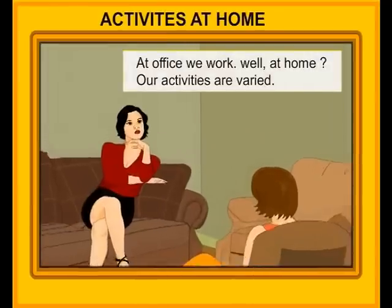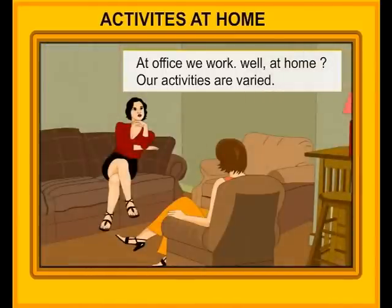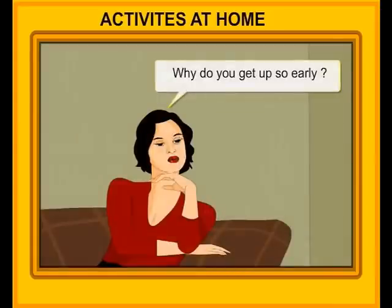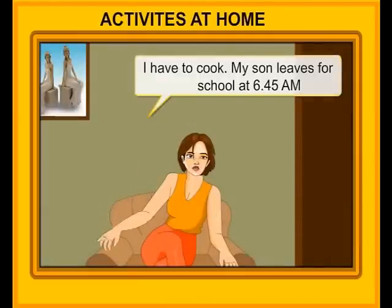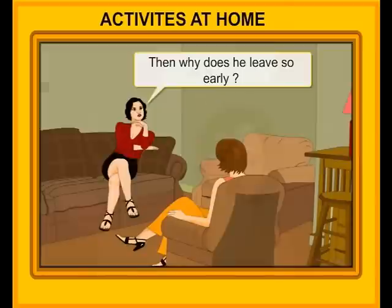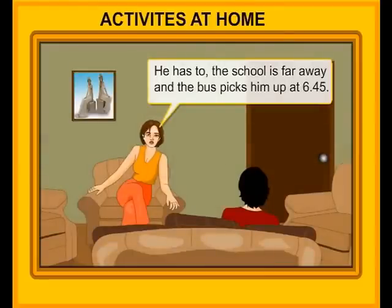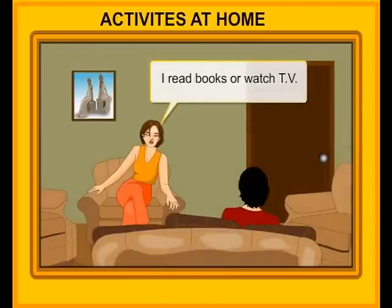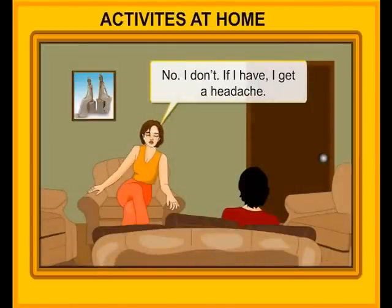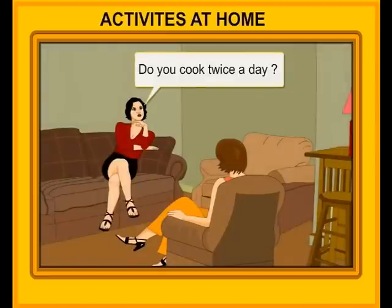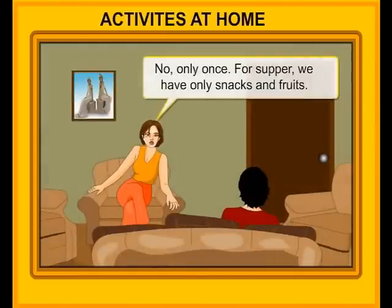Activities at home. At office we work, but at home our activities are varied. Let's see a conversation about activities at home. Normally, when do you get up? At five. Why do you get up so early? I have to cook. My son leaves for school at 6:45 a.m. At 6:45? When does his school start? At nine. Then why does he leave so early? He has to — the school is far away and the bus picks him up at 6:45. When does he return? By five. What do you do in the afternoons? I read books or watch TV. Don't you have a nap? No, I don't — if I do, I get a headache. When do you have your lunch? Usually about 1 o'clock. Do you cook twice a day? No, only once. For supper, we have only snacks and fruits.